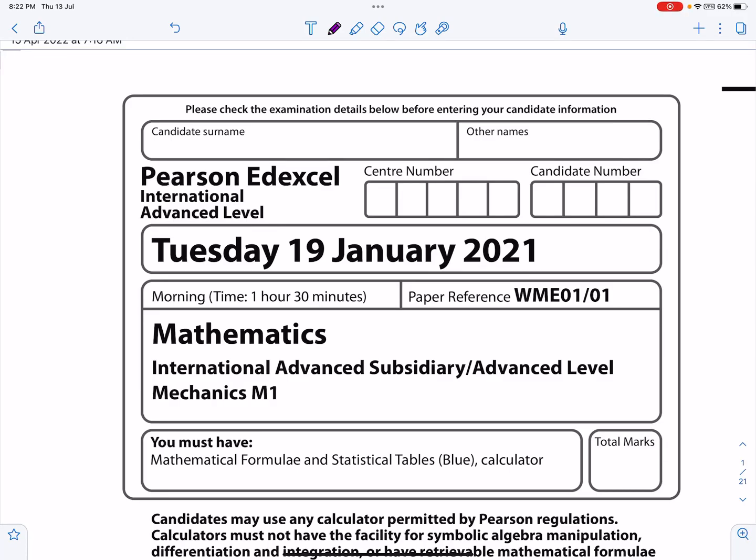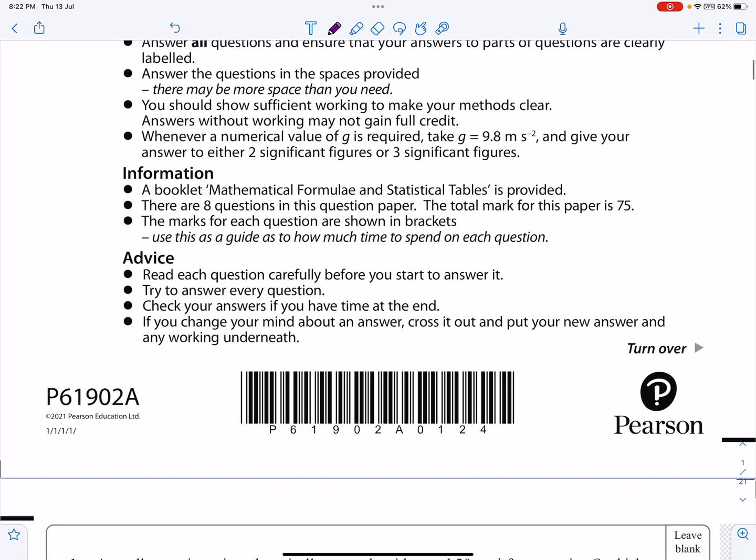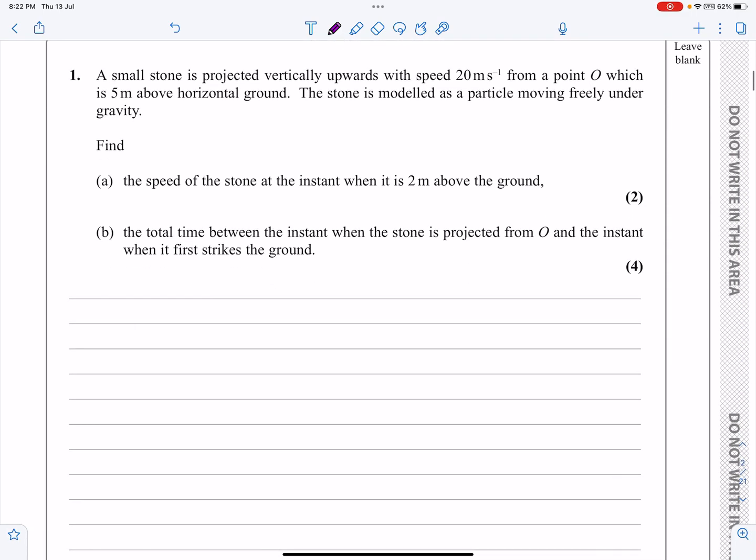Okay, this is the M1 paper from January 2021. We're going to have a look at question number one, and a quick look at it shows that it's kinematics. We've got vertical motion under gravity, so that's going to be constant acceleration, which means we can use all our SUVAT formulae.